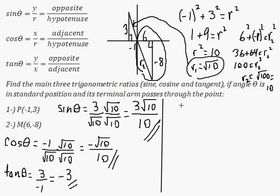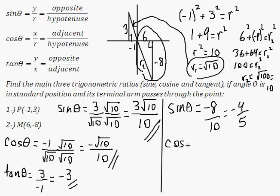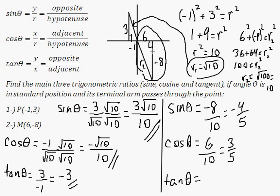Sine of theta for M at (6, negative 8) will be y, negative 8, over r2 which is 10. So that simplifies into negative 4 over 5. Cosine of theta will be equal to x over r: x is 6, r is 10, so we get 3 over 5. And finally tangent of theta is equal to y over x, negative 8 over 6, which simplifies into negative 4 over 3.